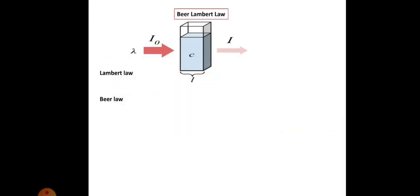The principle behind this experiment is the Beer-Lambert Law. Whenever we pass monochromatic light — that is, light of a single wavelength — into a colored solution, some amount of the radiation is absorbed and the remaining is transmitted. I₀ indicates the intensity of incident radiation, I indicates the intensity of transmitted radiation, C is the concentration, and L is the path length.